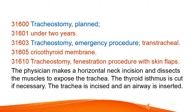Tracheostomy: planned, under two years, emergency procedure, transtracheal, cricothyroid membrane, and fenestration procedure with skin flaps. The physician makes a horizontal neck incision and dissects the muscles to expose the trachea. The thyroid isthmus is cut if necessary, the trachea is incised, and an airway is inserted.